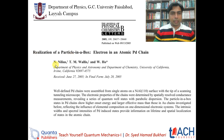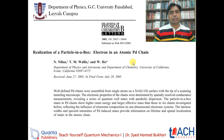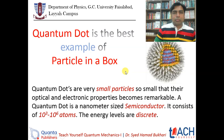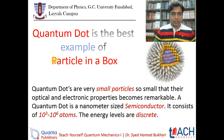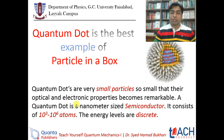The experiment was done as a realization of a particle in a box — an electron in an atomic chain. A quantum dot is the best example of a particle in a box. Quantum dots are very small particles, so small that their optical and atomic properties become remarkable at that size. A quantum dot is a nanometer-sized semiconductor consisting of 10^3 to 10^6 atoms, and the energy levels are discrete.